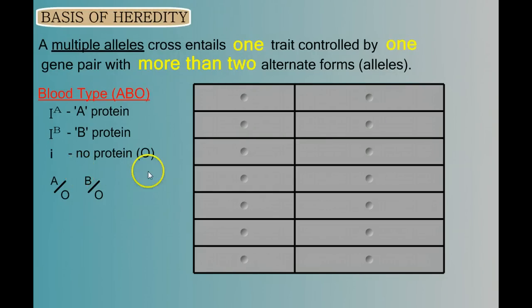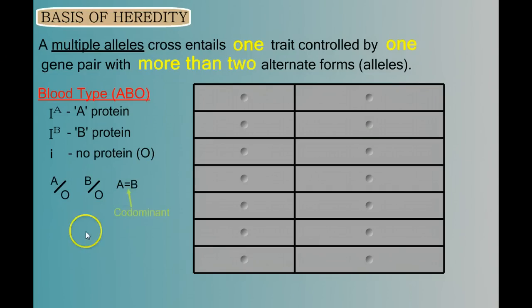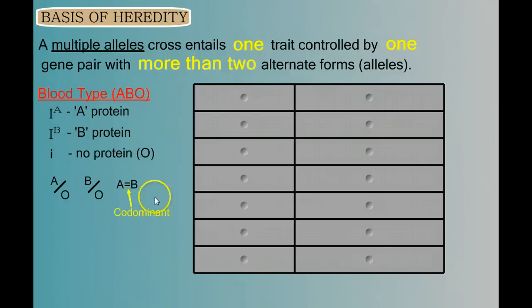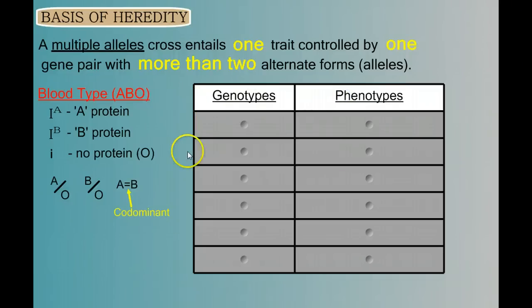But how do A and B compare to each other? It turns out that A and B are equal — this is an example of codominance. If you have the A allele along with the B allele, both will be expressed, and your blood cells will have both the A and the B protein on their surface. Armed with this information, can you fill out the chart listing all possible genotypes and their corresponding phenotypes? Pause the video, take out a piece of paper, and try to fill in this chart.